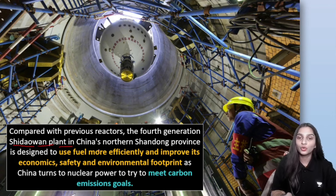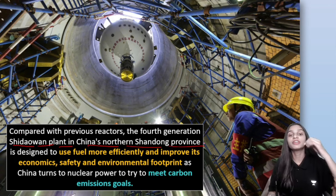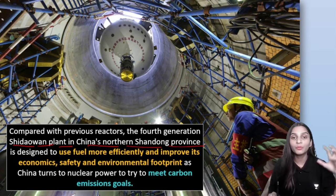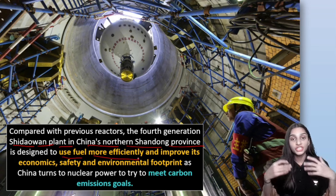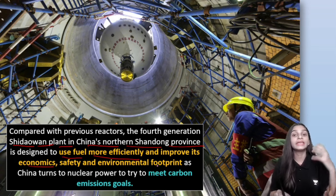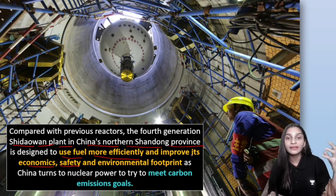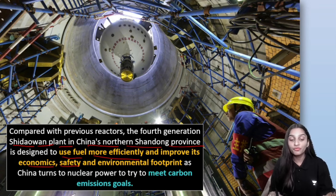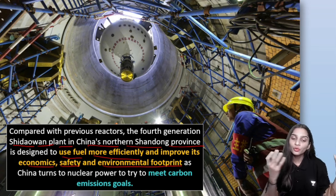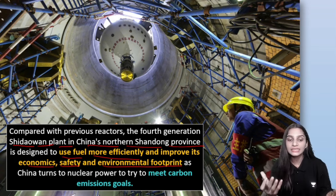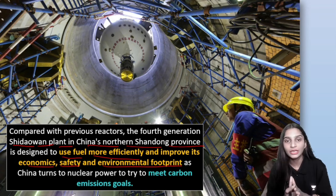The plant in China is called the Shidao One plant. It is located in the northern Shandong area and has been designed to use fuels in a more efficient way, improve the economy, and enhance the safety of the country.